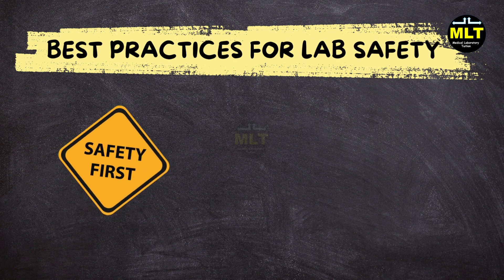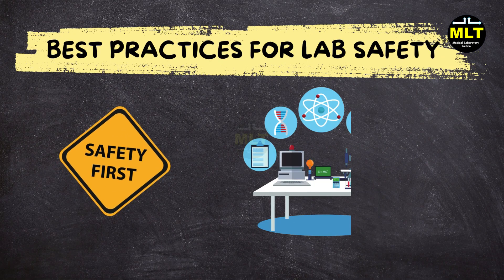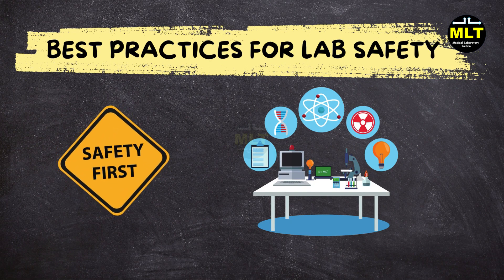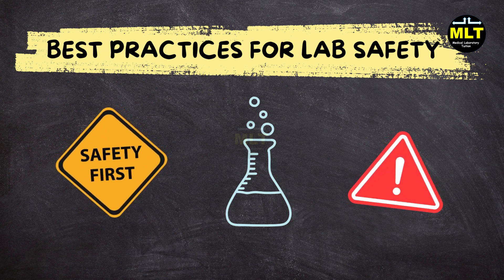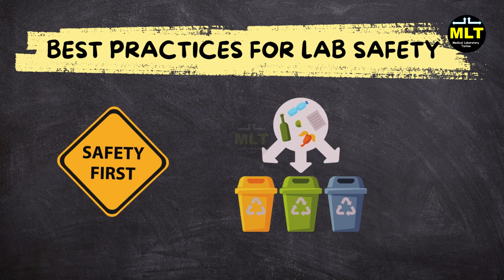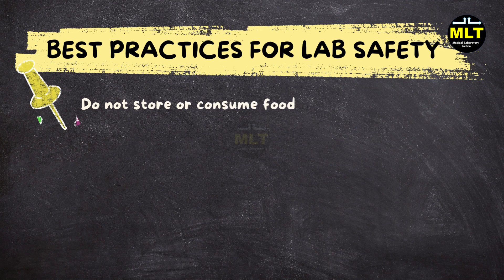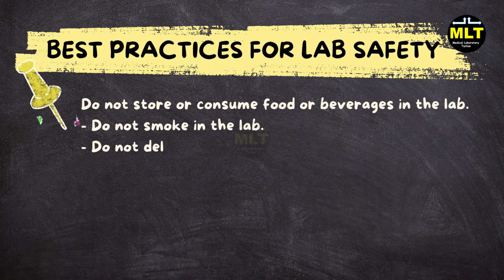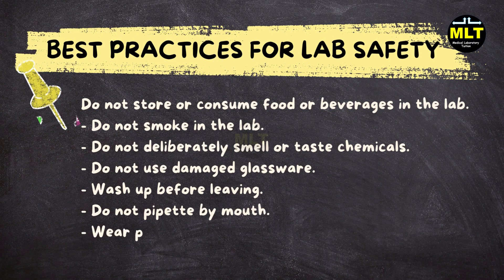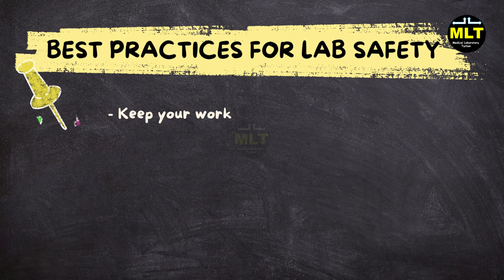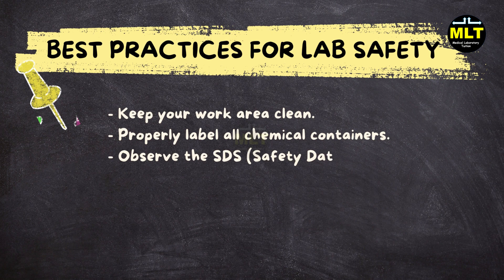Section 7: Best Practices for Lab Safety. Staying safe goes beyond just knowing what to do in an emergency — it's also about your daily activities in the lab. Regularly check equipment and ensure chemicals are labeled and stored properly. A clean workspace is key to avoiding accidents and contamination. For instance, if you leave chemicals uncapped, they could evaporate and create hazardous fumes. Properly dispose of chemical, biological, and sharp waste materials to maintain a safe environment. Important reminders: Do not store or consume food or beverages in the lab. Do not smoke in the lab. Do not deliberately smell or taste chemicals. Do not use damaged glassware. Wash up before leaving. Do not pipette by mouth. Wear proper PPE. Keep your work area clean. Properly label all chemical containers. Observe the SDS safety data sheet. Post appropriate warning signs.